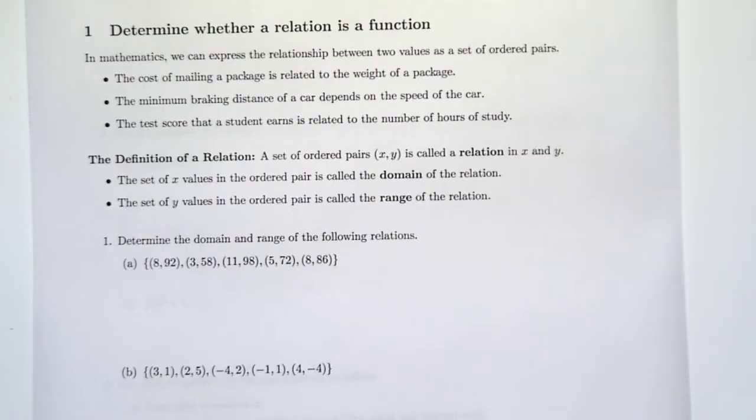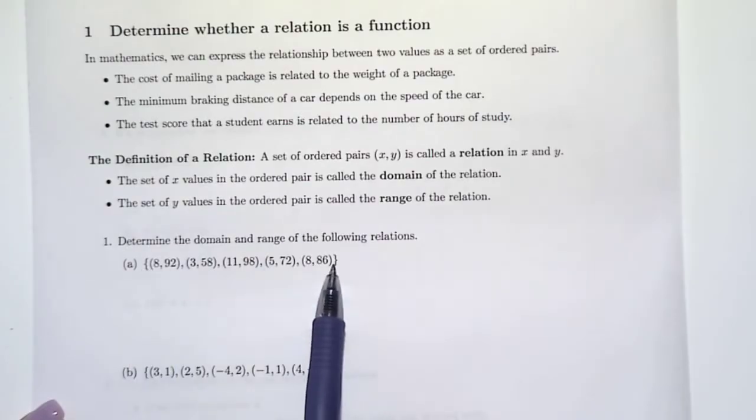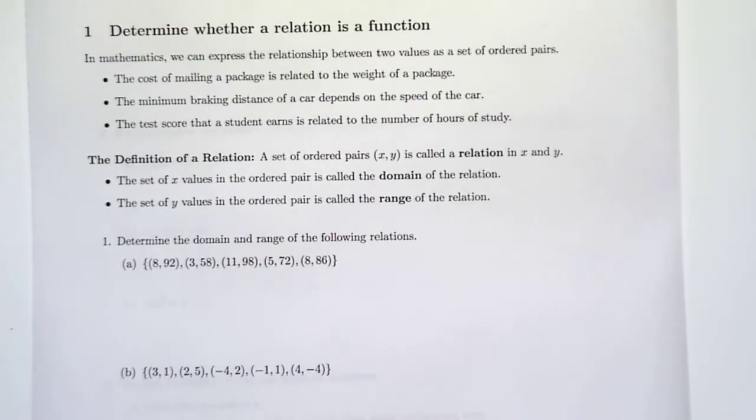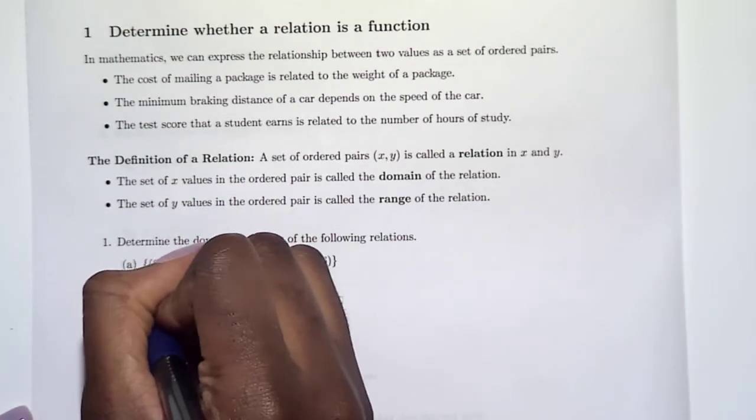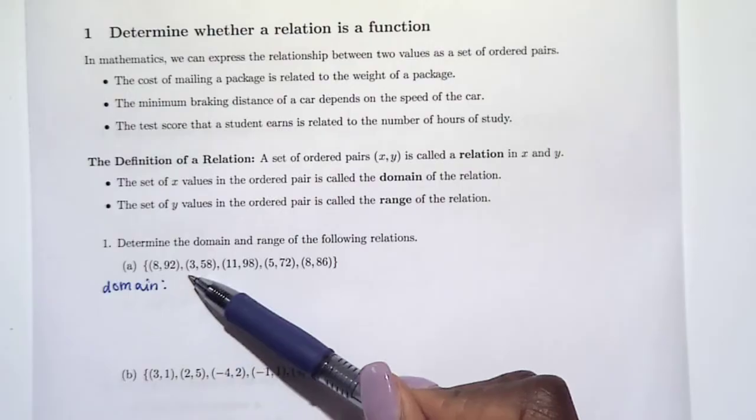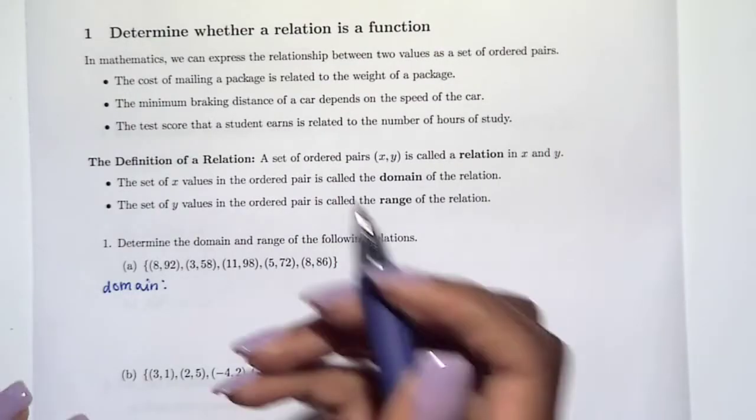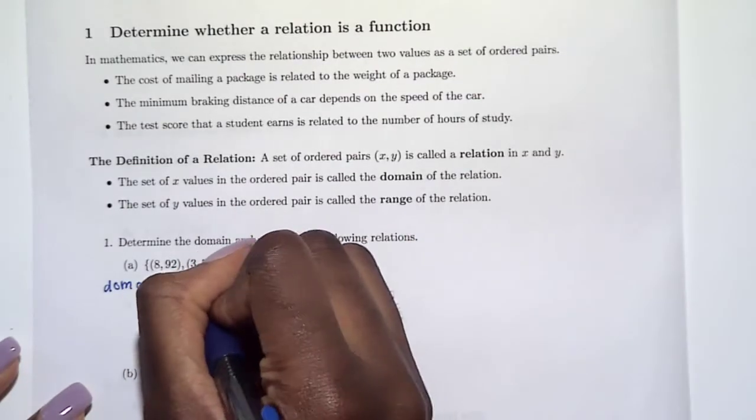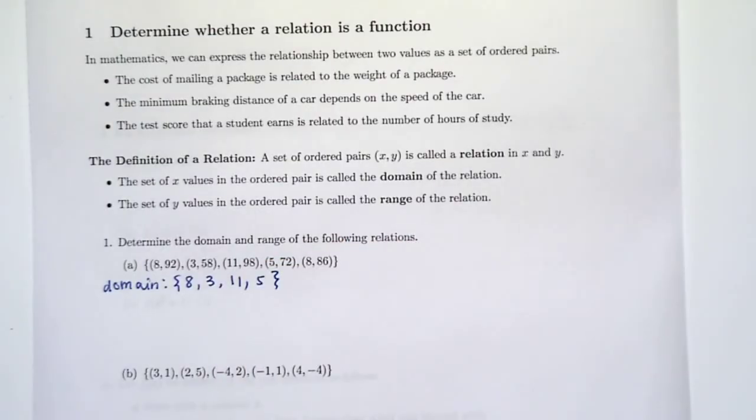One thing to note: a relation is a set of ordered pairs, so we use braces here to represent sets, and that's also how we're going to write out our domain and range. The domain is just the set of x values we have. So the x values we have here are 8, 3, 11, 5, and 8. We're not going to write 8 twice, no need.